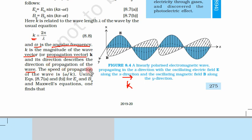The speed of propagation of the wave is ω/k. So what is the speed of propagation of the wave? That is ω/k.